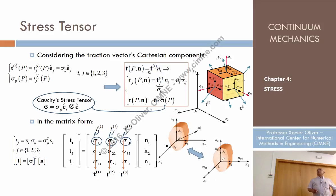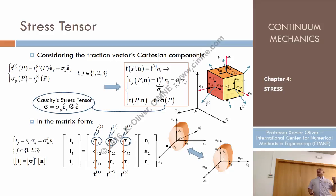Now I write the same equation in components. The component J of this traction vector is T_ij, but T_ij has been defined as sigma_ij. So we get sigma_ij times N_i. Therefore, T_j at point P in direction N — that is, the component in direction J of the traction vector at point P in direction N — can be obtained as N_i times sigma_ij, the sum of those three components.